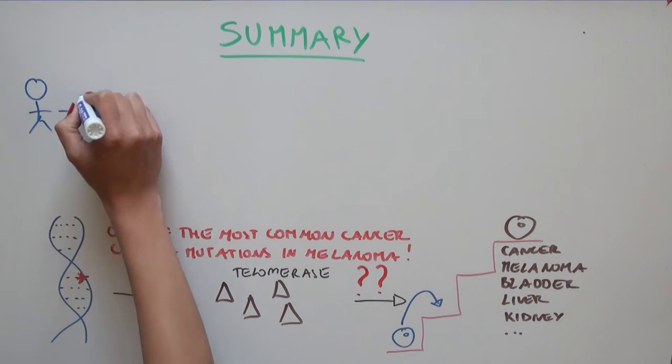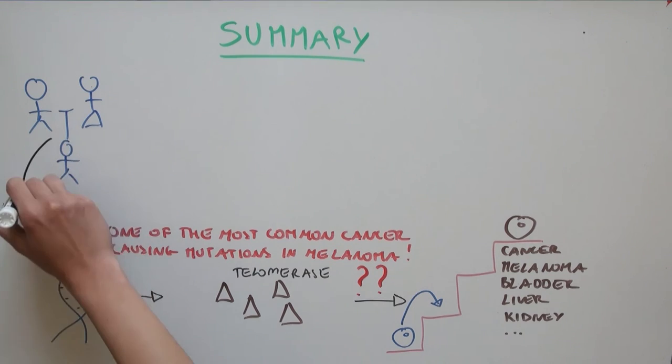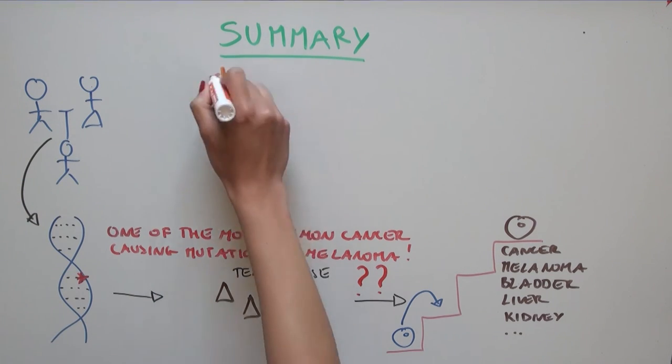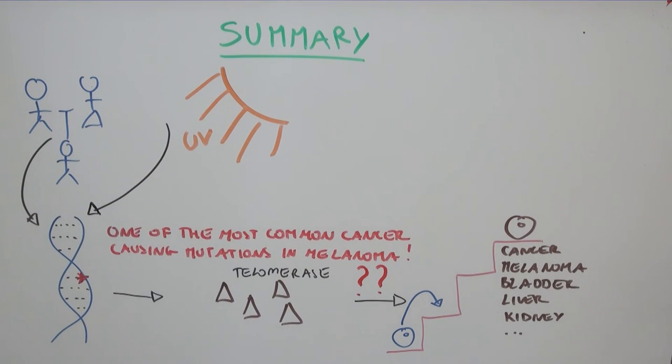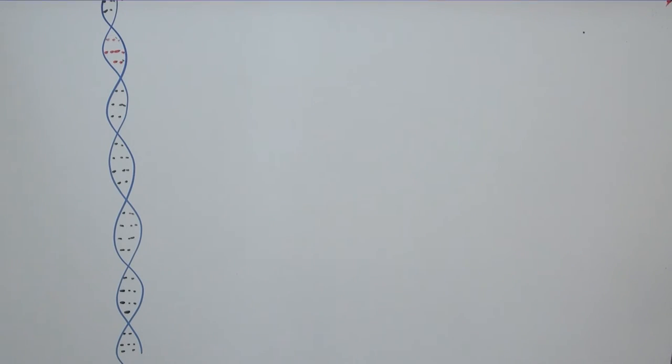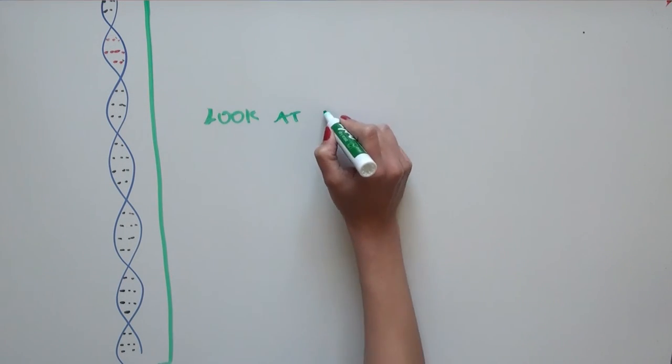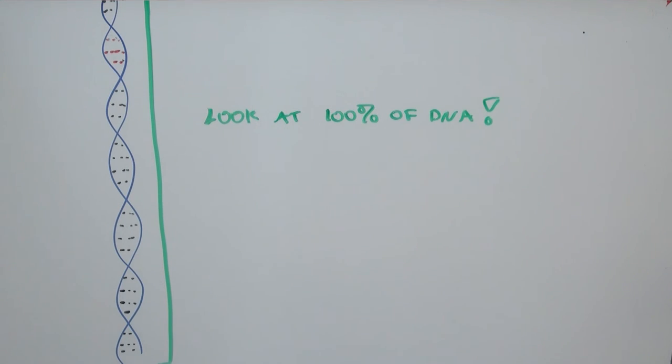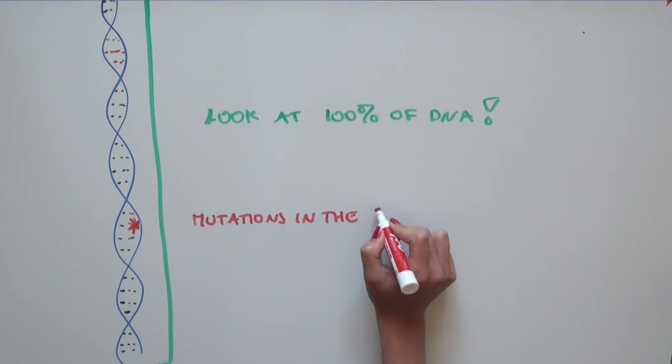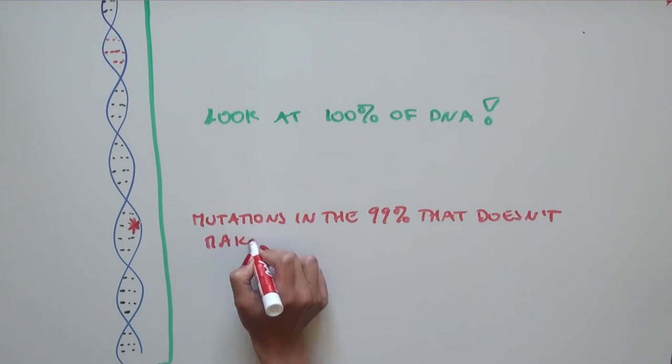Cancer patients with the mutation inherited the mutation from their parents, in the familial case, or acquired it from sun exposure. So overall, this study showed that it's very important to look at 100% of the DNA sequence, because mutations in the 99% of the DNA that doesn't make proteins can be driving cancer.